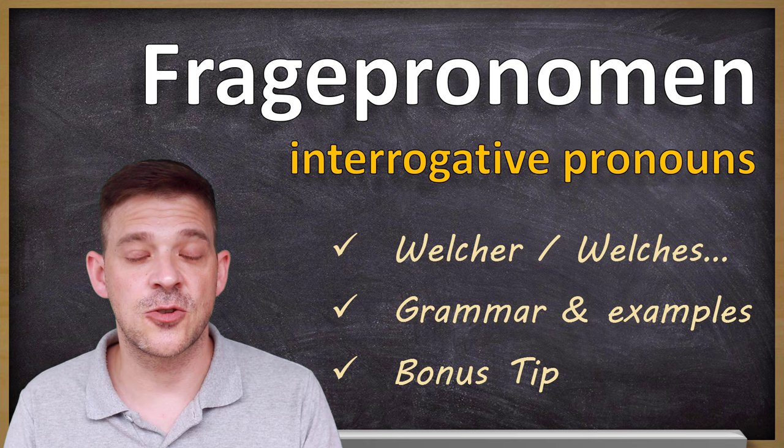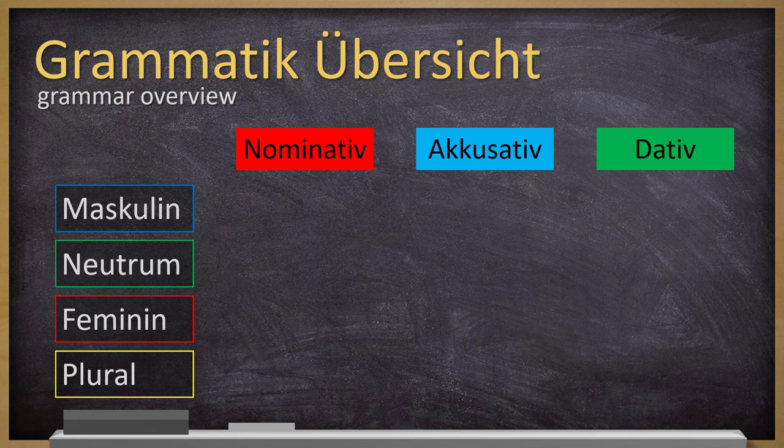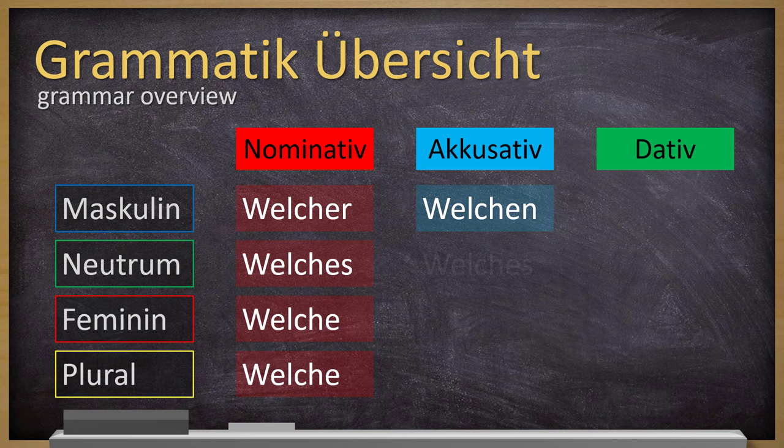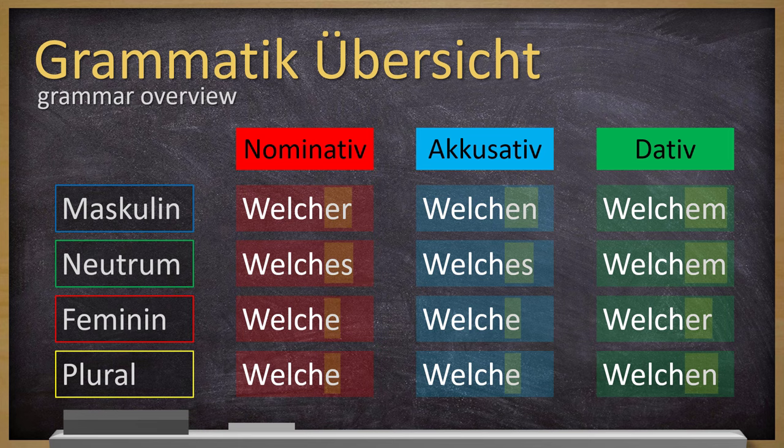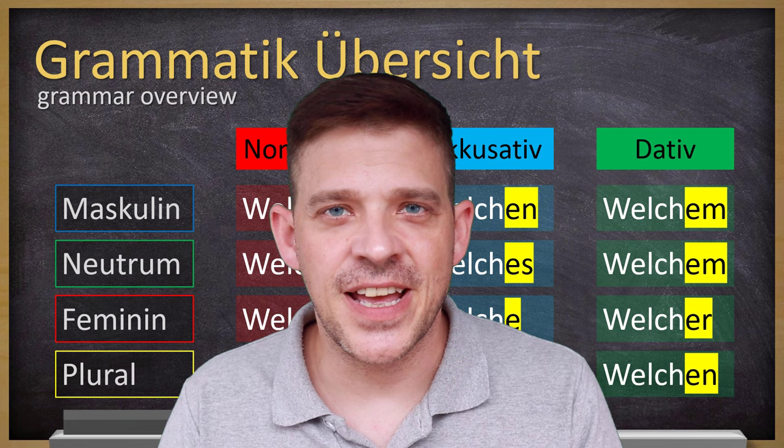First I'd like to give you a quick overview — die Grammatik Übersicht. On top you have the three cases: Nominativ, Akkusativ, and Dativ. On your left-hand side the genders: Maskulin, Neutrum, Feminin, and Plural. We fill this table to see all the different options. Important: you always have welch- and then a specific ending for each case and gender. Don't worry — I'll tell you in a second how to memorize those endings easily.